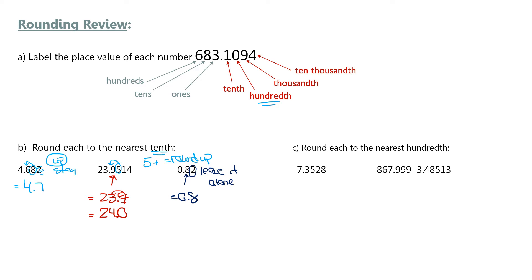Next question: round to the nearest hundredth. Hundredths are the second spot after the decimal. That means I need to keep 7.35, ignoring the digits after. The two in the thousandths place tells me what to do with the hundredths digit five — and the two tells me to leave it alone. So the answer is 7.35, rounding down.